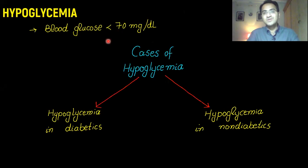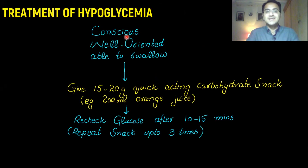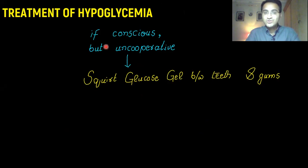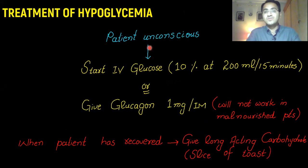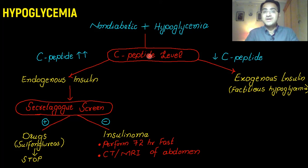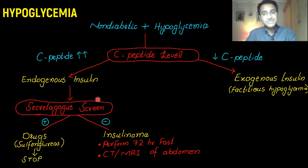In summary: hypoglycemia in non-diabetics is defined as blood glucose less than 70 mg/dL. Conscious, well-oriented patients receive 15 to 20 grams of quick-acting carbohydrate. Conscious but uncooperative patients receive glucose gel squirted between the teeth and gums. Unconscious patients receive IV treatment only. For non-diabetics with recurrent hypoglycemic attacks, C-peptide levels and a secretagogue screen are used to differentiate factitious hypoglycemia from insulinoma.